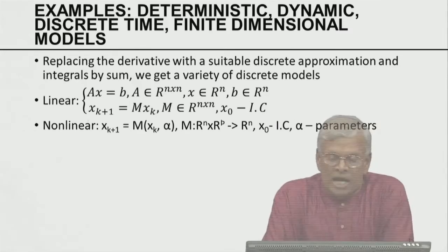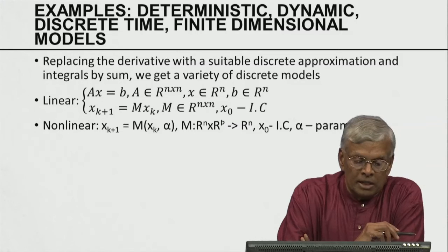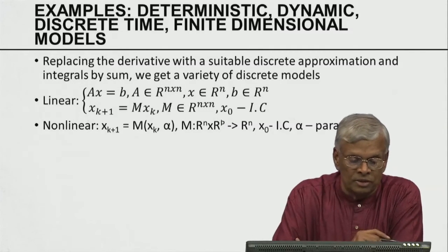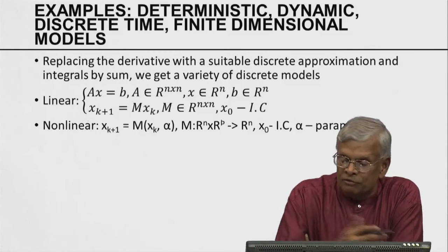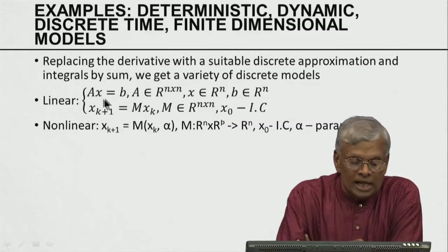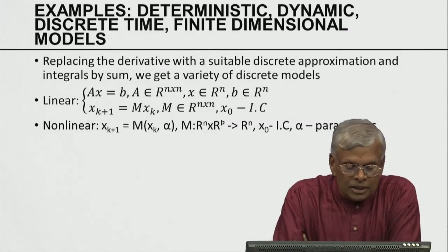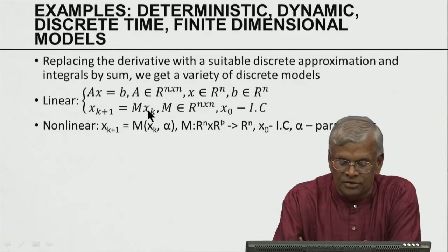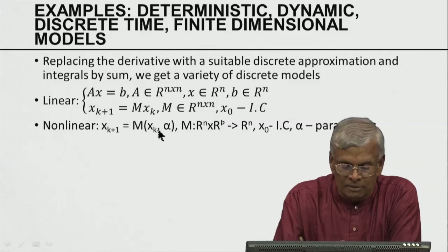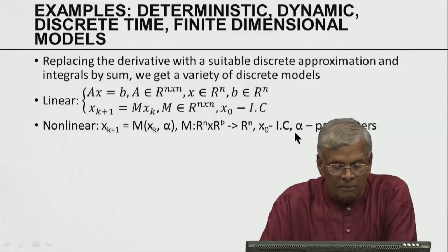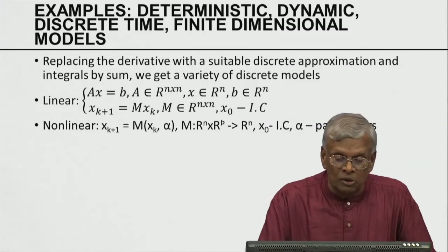Examples of deterministic, dynamic, discrete-time models: by replacing the time derivative with a discrete-time approximation, we can express a differential equation as a difference equation. Replacing an integral by a sum gives a variety of discrete-time models. The integral equation gives rise to a linear equation: AX = B, where A and B are known and the job is to find X — that is a static model. The dynamic model is X_{k+1} = M·X_k (a linear discrete-time model with initial condition X_0). A nonlinear model: X_{k+1} = M(X_k, alpha), where alpha is a parameter and we have initial conditions and parameters.